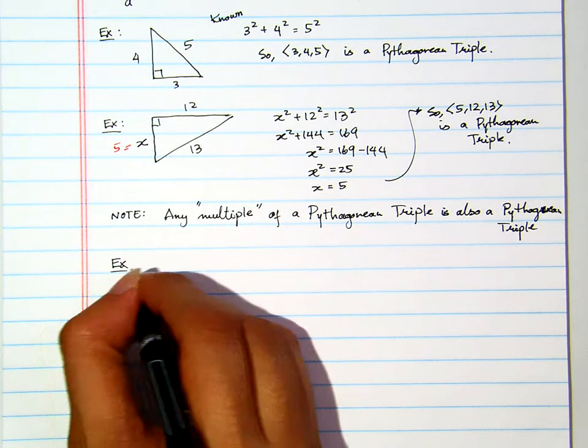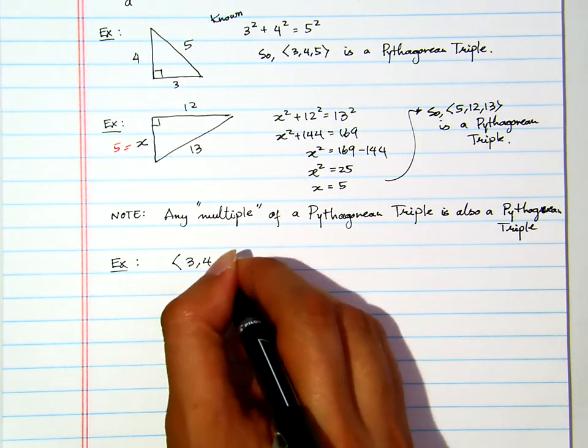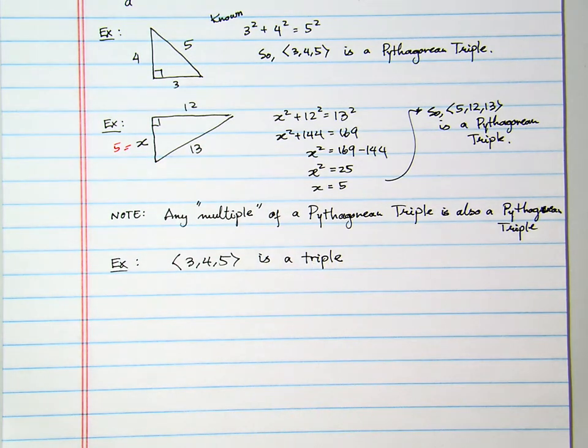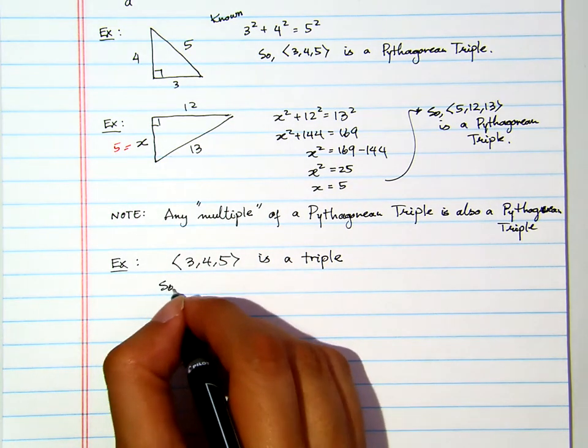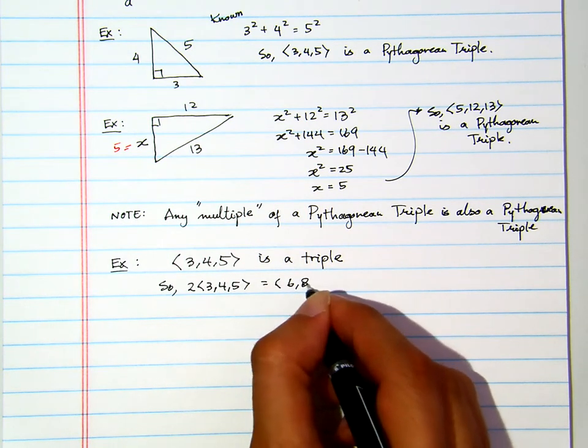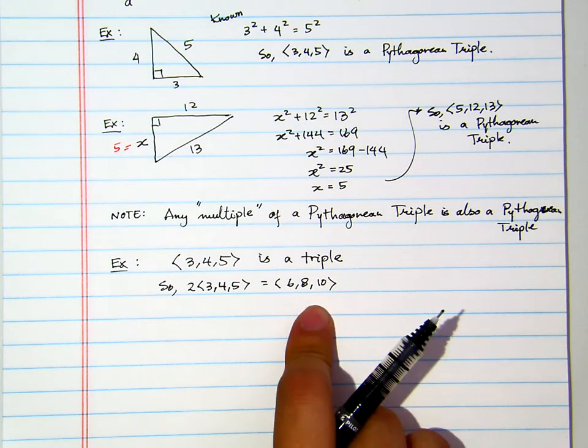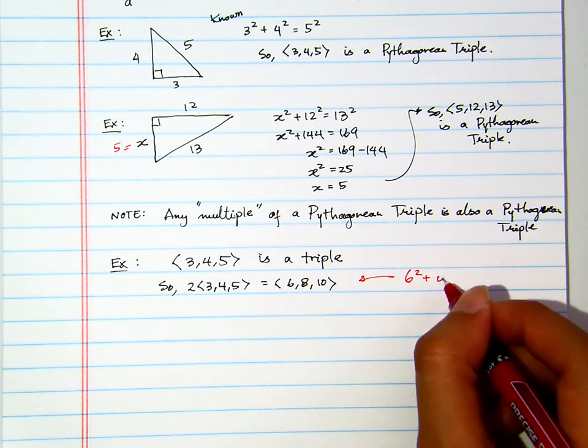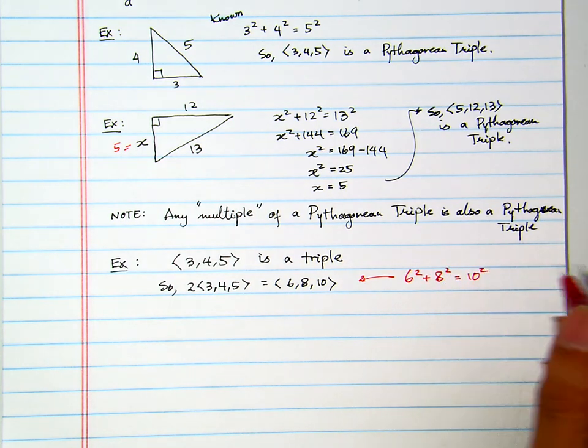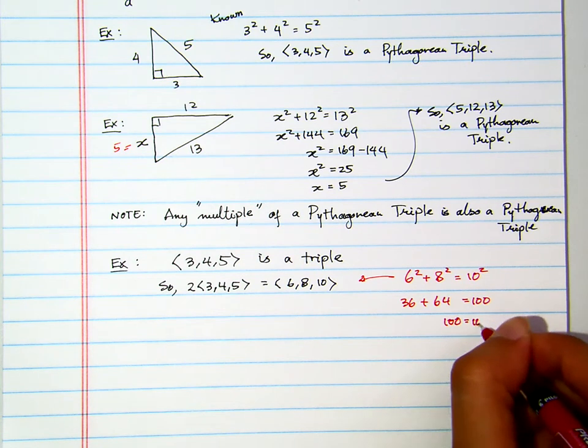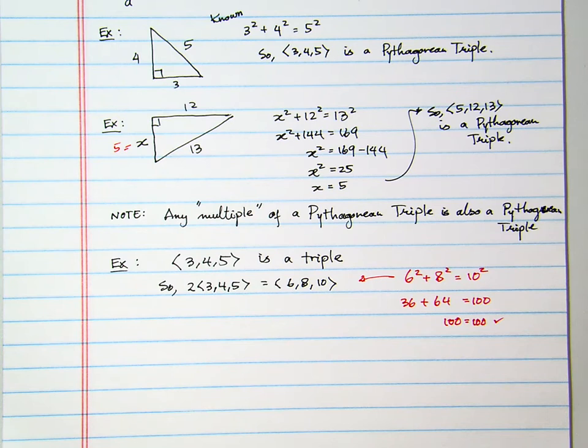For example, we know that 3, 4, 5 is a triple. Now, let's say we multiply this by 2, which is 6, 8, 10. We want to show that this is also a triple. You see that 6 squared plus 8 squared equals to 10 squared. There's 36 plus 64 equals to 100. 100 equals to 100. So, any multiple of a triple is a triple.